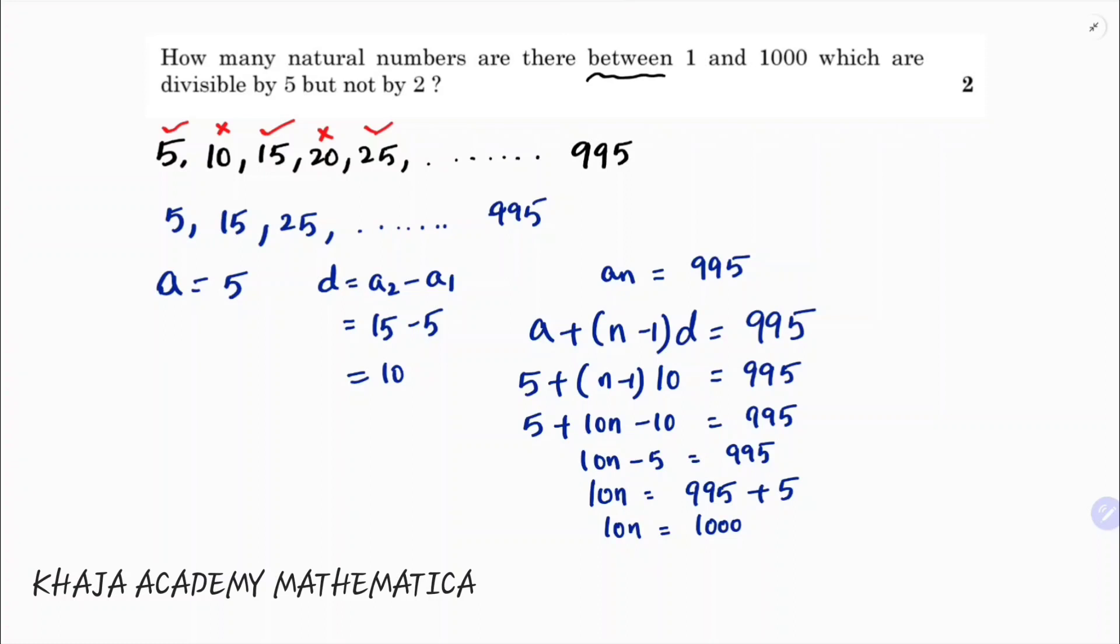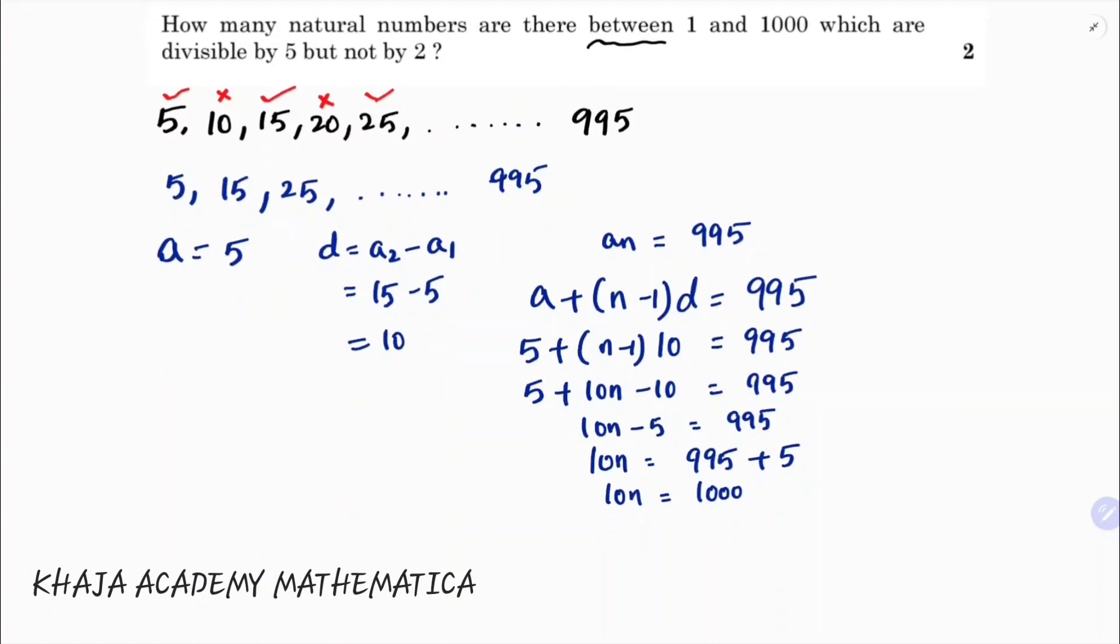So n equals 1000 by 10. So n equals 100. So how many natural numbers are there between 1 and 1000 which are divisible by 5 but not by 2 is 100.